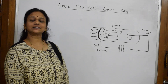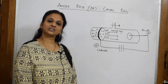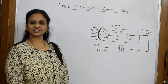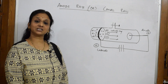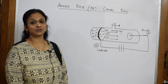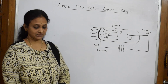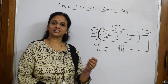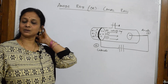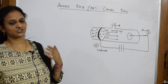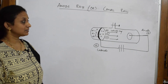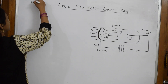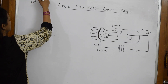Now, after understanding the cathode rays and their properties, let's come to the next concept: anode rays or canal rays. Basically, anode rays or canal rays are positively charged — nothing but protons. This was introduced by Goldstein.